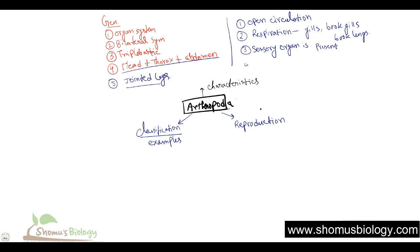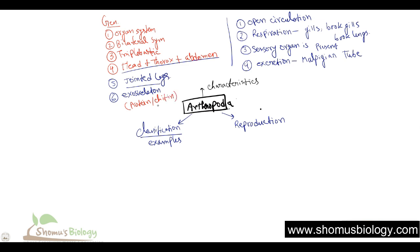Excretion is done using the Malpighian tube, which is the excretory organ used by arthropods. They also have an exoskeleton system, and this is another very common feature. The exoskeleton is mostly made up of protein and a little bit of lipids — an example of such a protein is chitin (C-H-I-T-I-N). In fact, when people eat insects, they are consuming high protein content because the entire exoskeleton structure is made up of proteins like chitin.